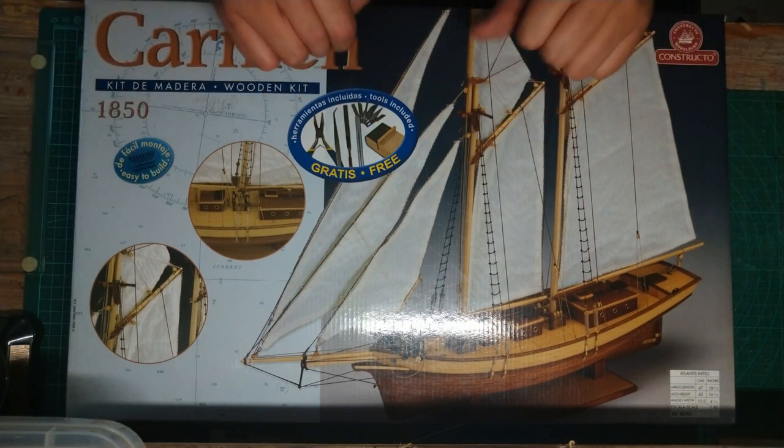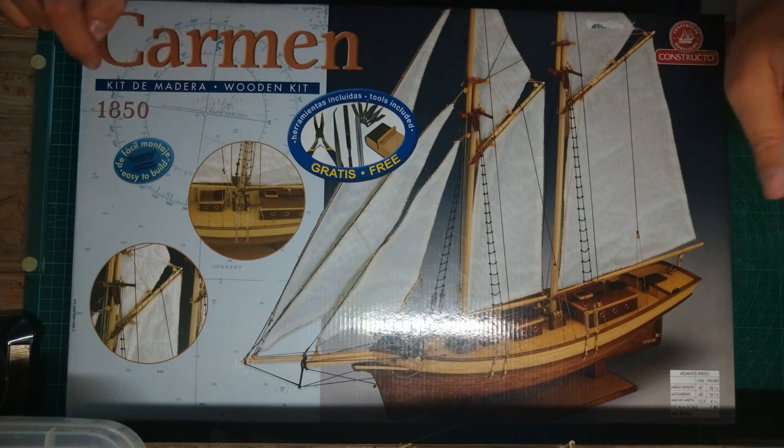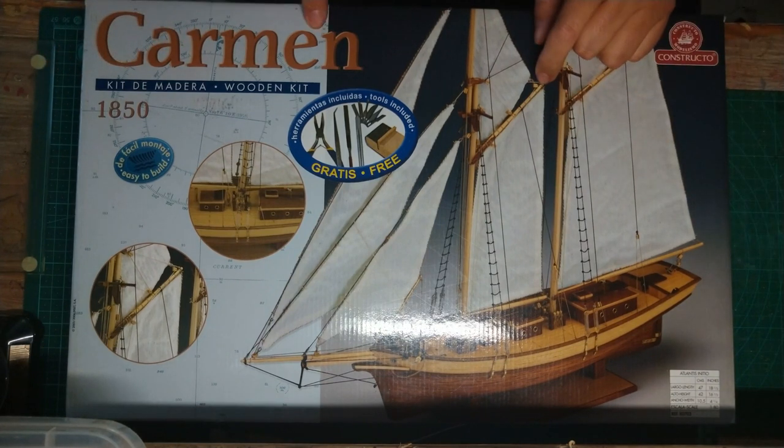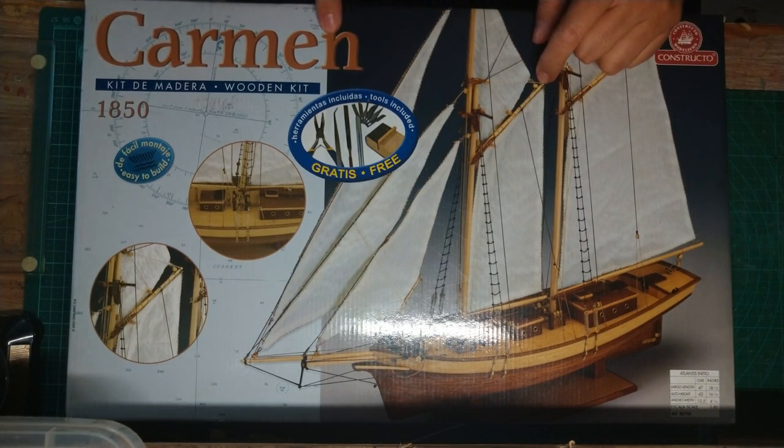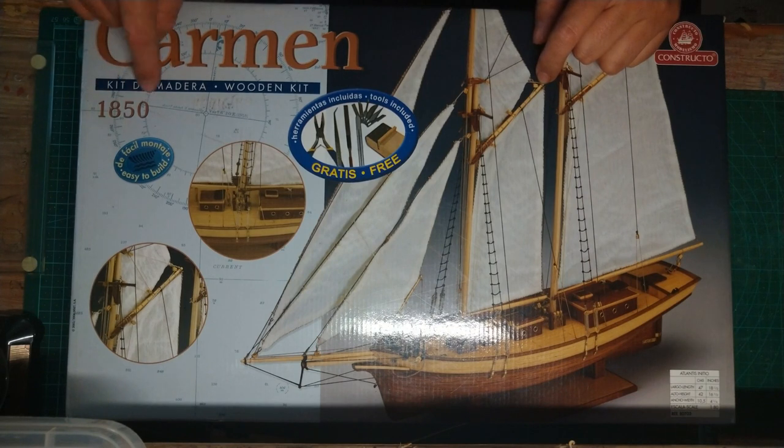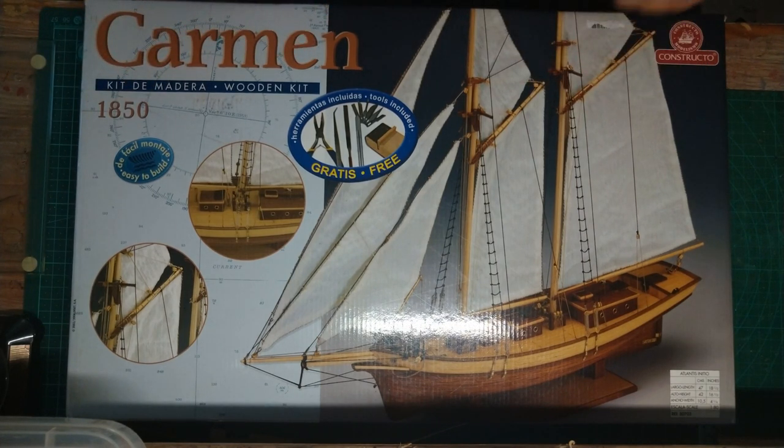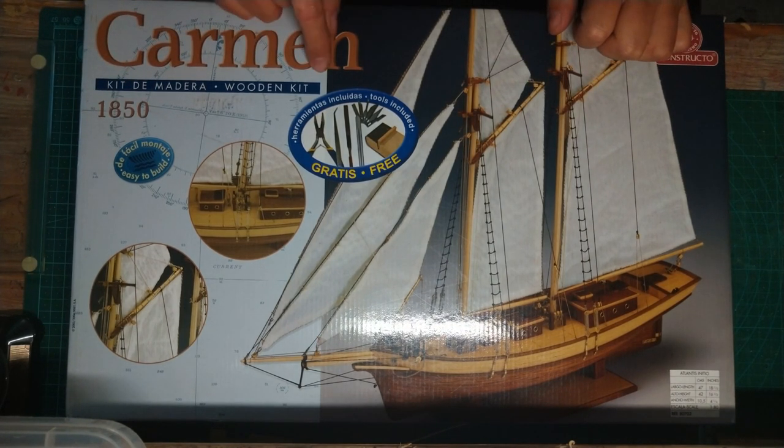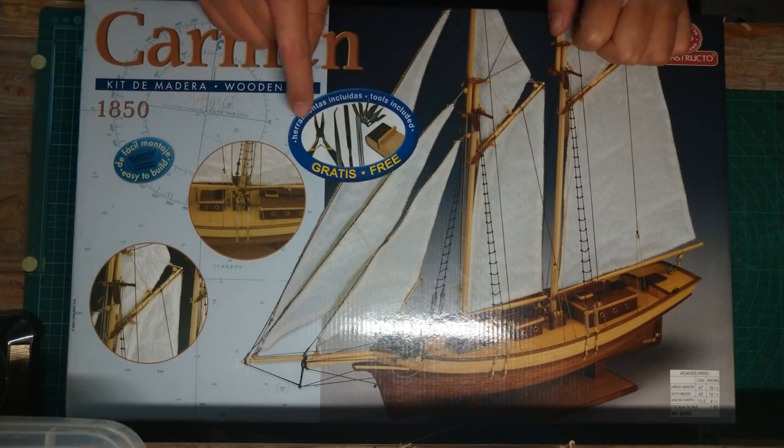This is a new model. I've never done shipbuilding before. This is a wooden model. They call it a Kalman 1850. It's a wooden kit. You get some free goodies as well: long nose pliers, tweezers, looks like a file.